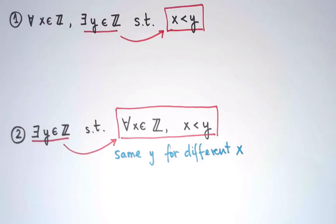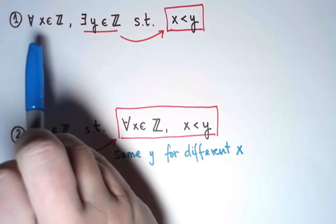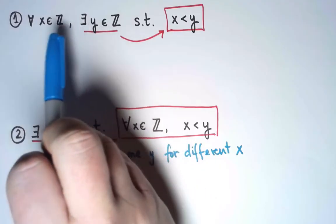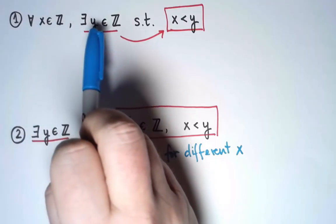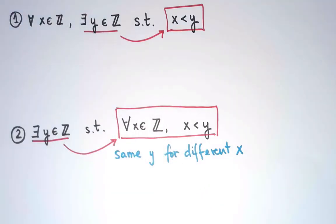But here, I'm saying for every x there is a y. So for x equals 1, there exists a y. For x equals 2, there exists another y. For x equals 3, there exists another y. The key here is that we may use different y for different x.